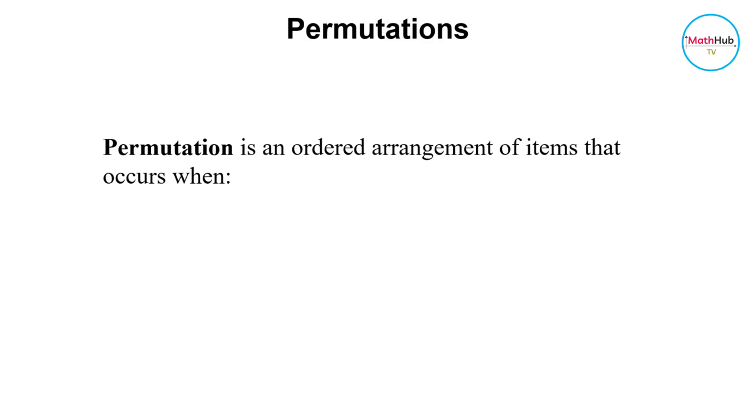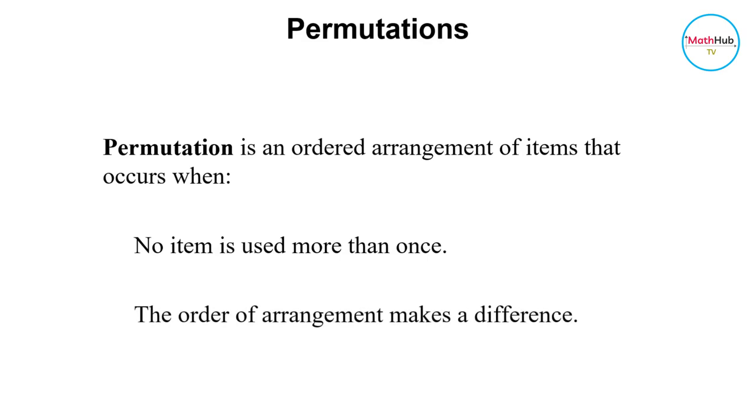In other words, a permutation is an ordered arrangement of items that occurs when no item is used more than once and the order of arrangement makes a difference.